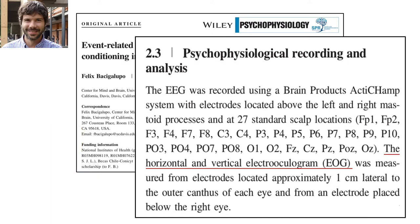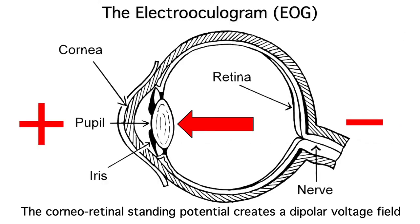The EOG is a consequence of the fact that there's a standing electrical potential between the front and back chambers of the eye. You get positive at the front of the eye and negative at the back of the eye, creating an equivalent current dipole. This dipole creates a strong voltage that spreads to the scalp.